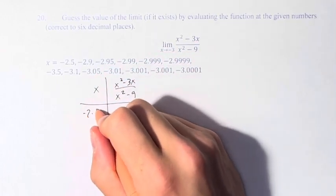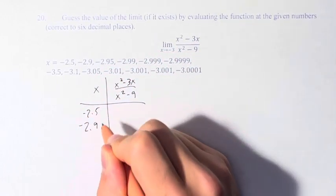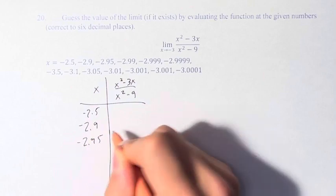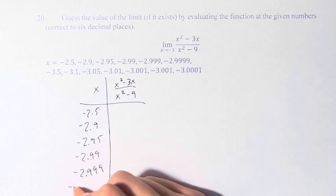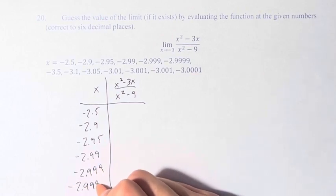So we have negative 2.5, negative 2.9, negative 2.95, negative 2.99, negative 2.999, and negative 2.9999.